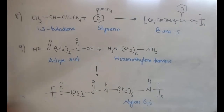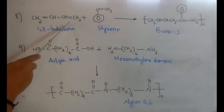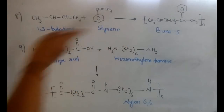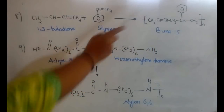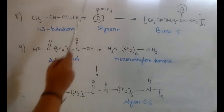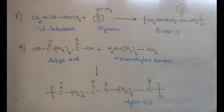The next important polymer is Buna-S, made from two monomers: 1,3-butadiene and styrene. In 1,3-butadiene the double bond shifts in the polymer to between CH and CH, and in styrene the double bond is gone, connecting with the butadiene unit. The key thing to remember is not the structure but the names of the monomers — Buna-S is made from 1,3-butadiene and styrene.